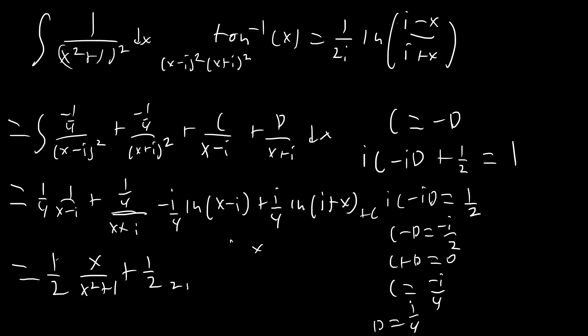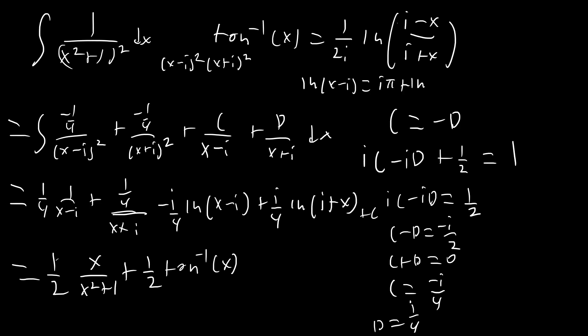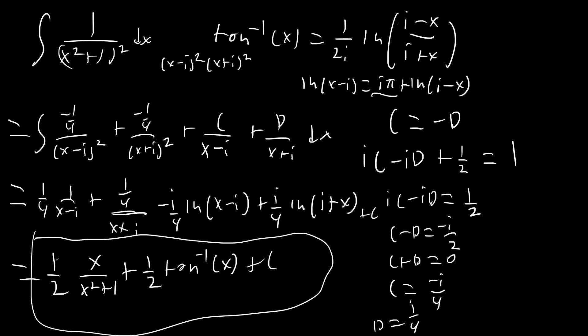I want to note that I flipped ln(x − i) to ln(i − x), which is completely justified because ln(x − i) = iπ + ln(i − x) for certain values of x, and when we're talking about real numbers this holds true. That iπ is covered by the +C, so we don't have to worry about that extra constant. And this is our solution once again.